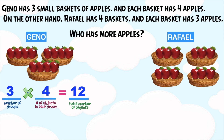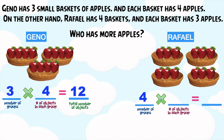Now let's go to Raphael. Using the multiplication sentence, let's count how many apples Raphael has. The first factor — the number of groups — is four. The second factor — how many objects in each group — is three apples. The total number of apples is 12. Notice that the product of 3 times 4 is the same as the product of 4 times 3.